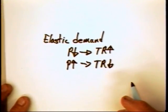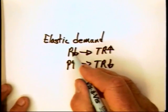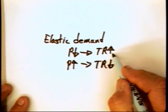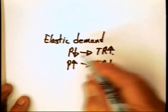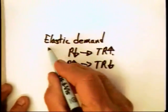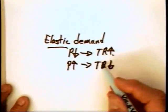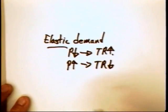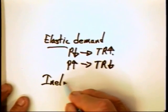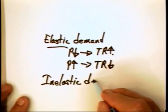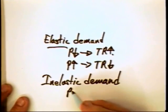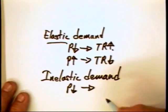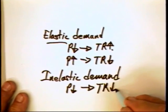We get total revenues simply by multiplying price times quantity. If you have a price reduction and total quantity consumed goes up substantially, you can imagine that total revenues can go up. Or put it another way, if total revenues go up, we have an elastic demand. If the price goes up and there's a great response on quantity — that is, a decrease in quantity — total revenues can go down. Under an inelastic demand, a reduction in the price is going to lead to a decrease in total revenue.